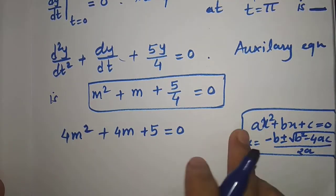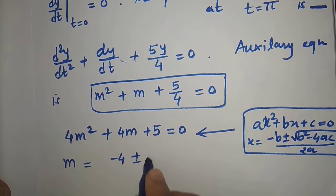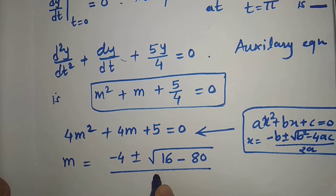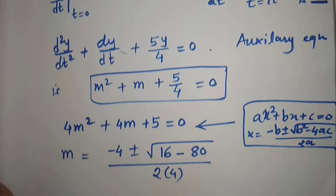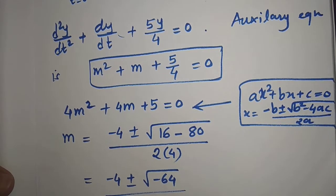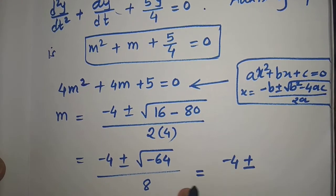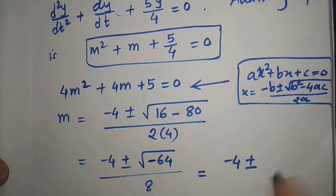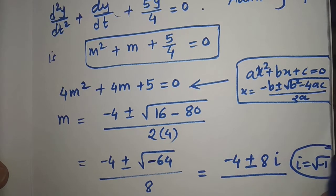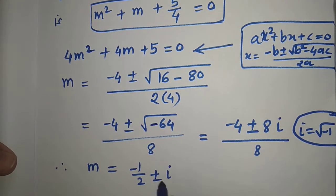Comparing values of a, b, and c: m equals minus 4 plus or minus root of 16 minus 80, divided by 8. This simplifies to minus 4 plus or minus root of minus 64, divided by 8. The square root of 64 is 8, but the minus sign gives a complex number, so this is 8 times iota where iota is the square root of minus 1. Dividing by 8, m equals minus one-half plus or minus iota.